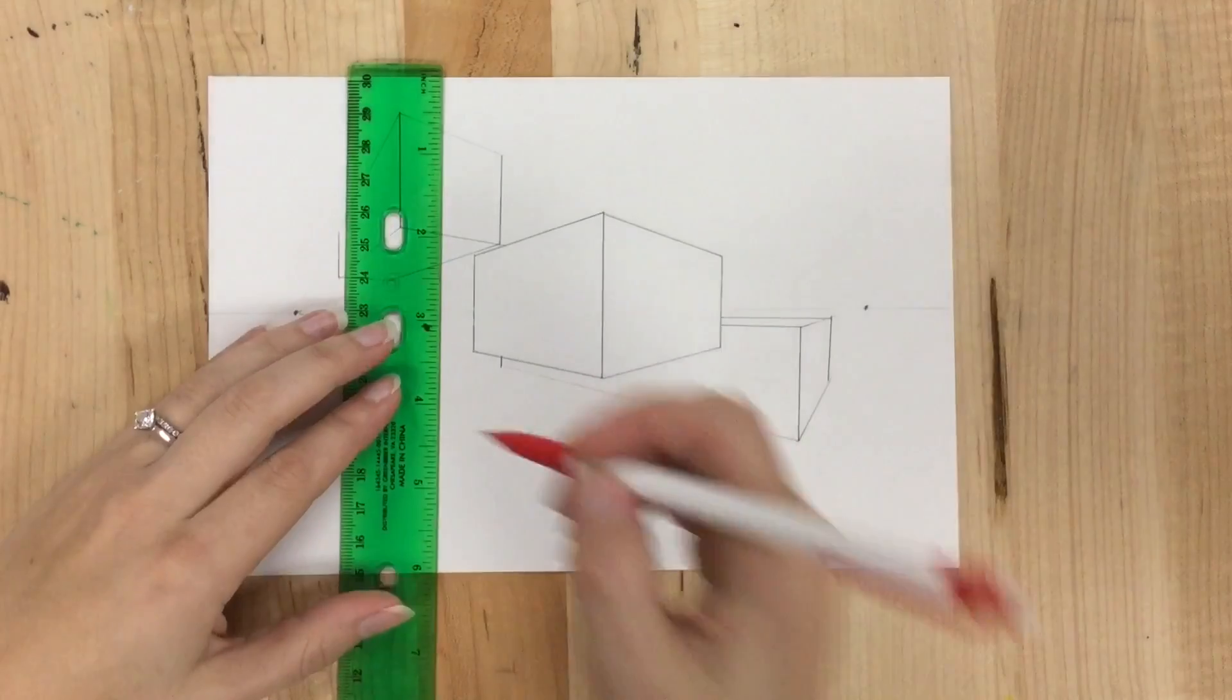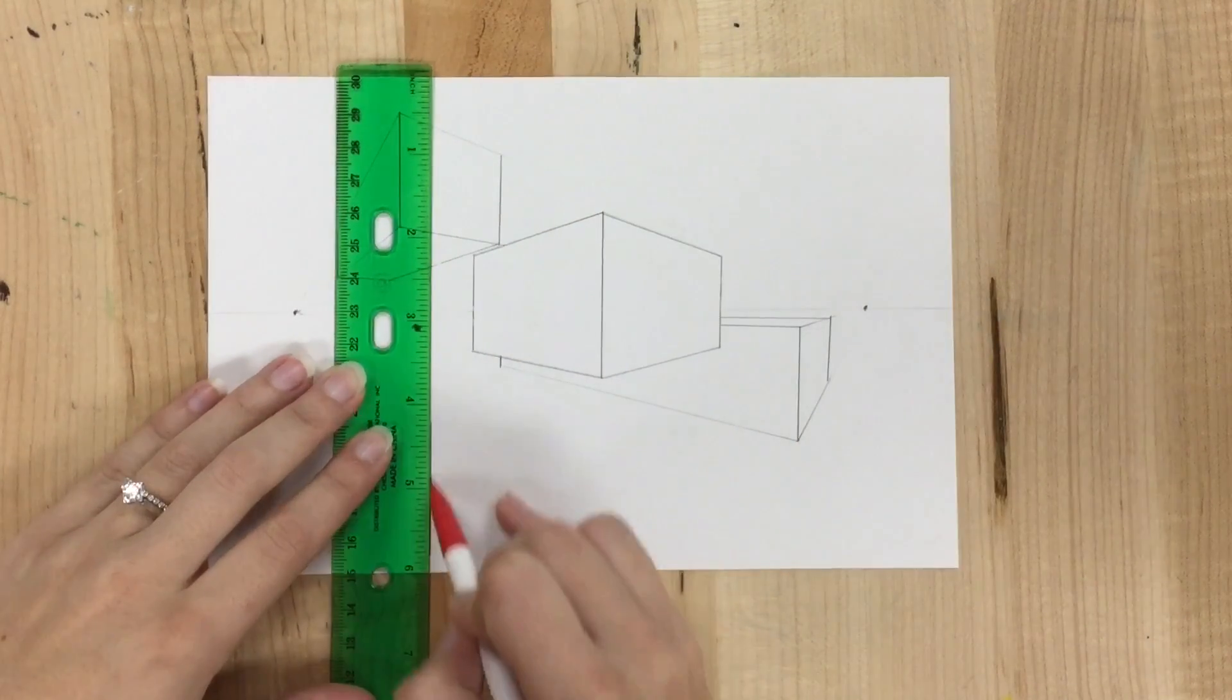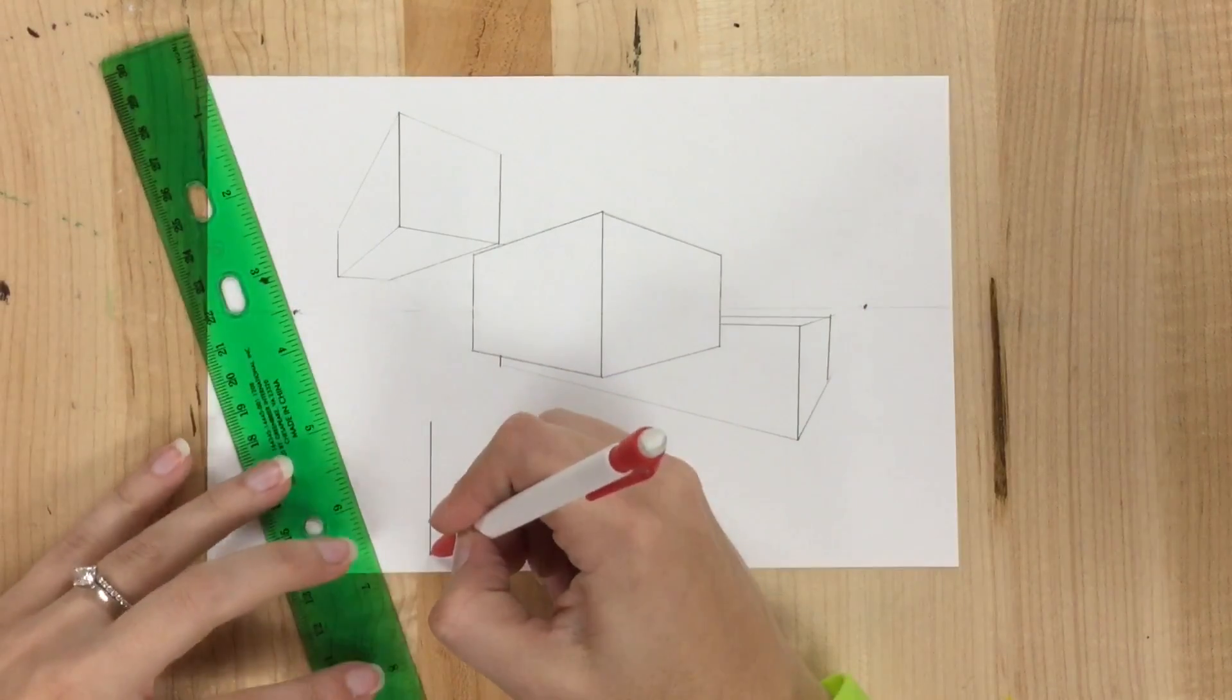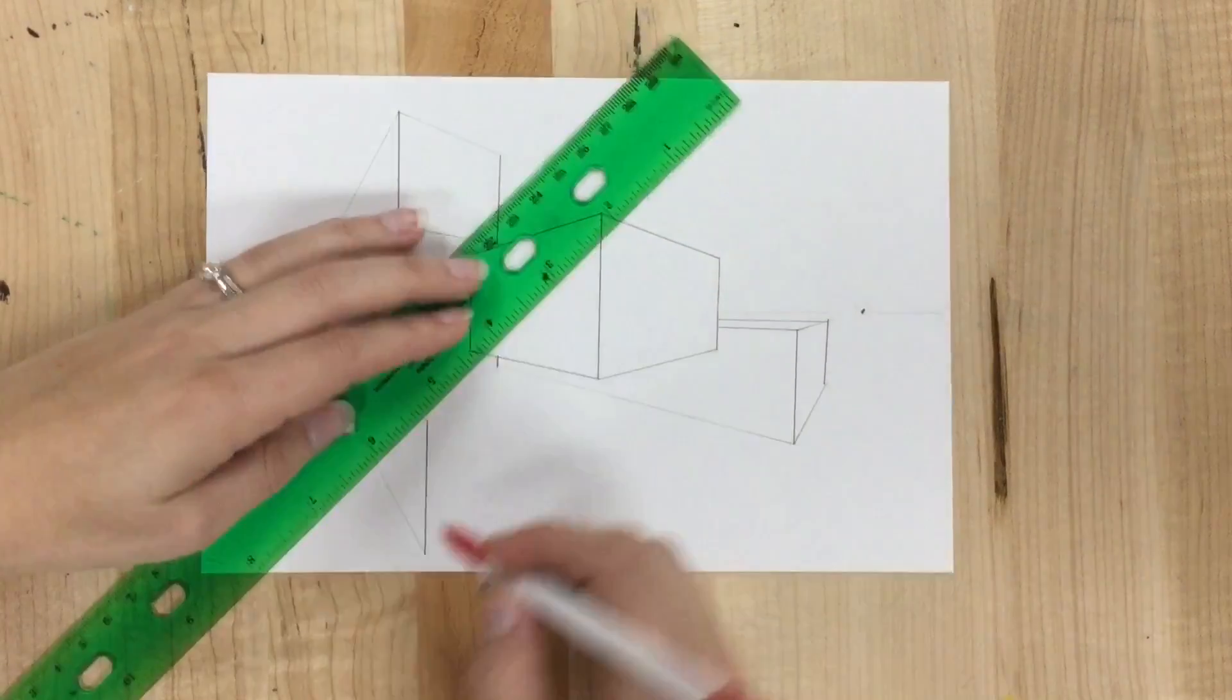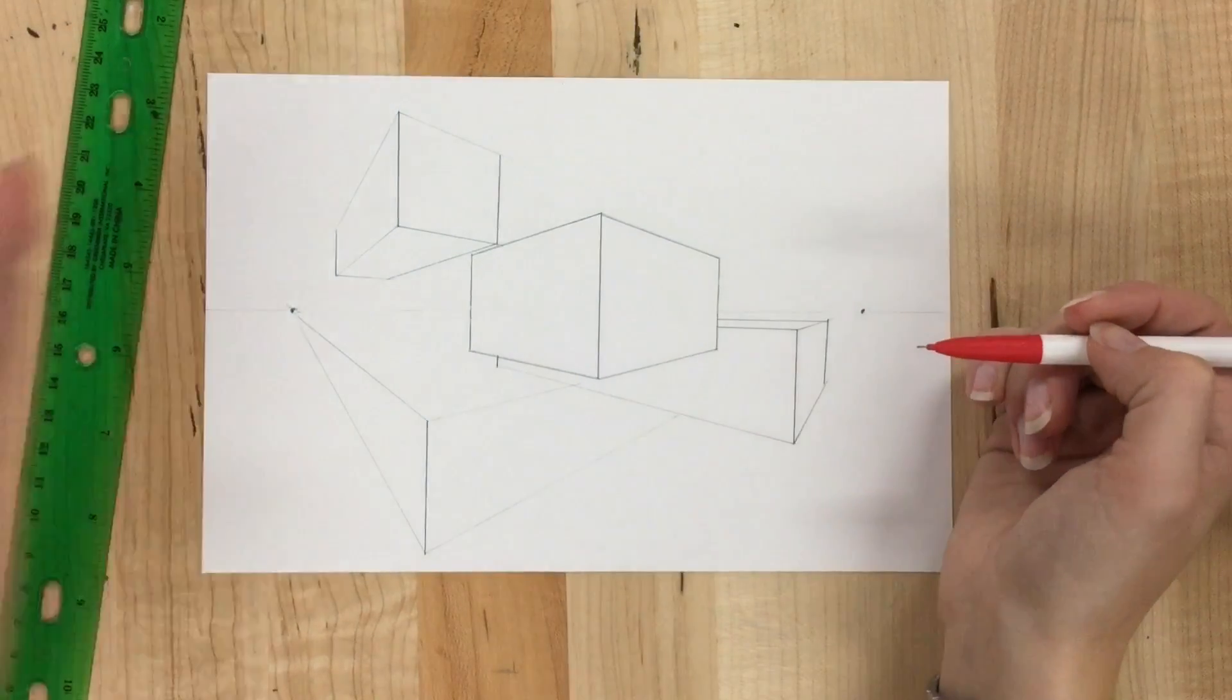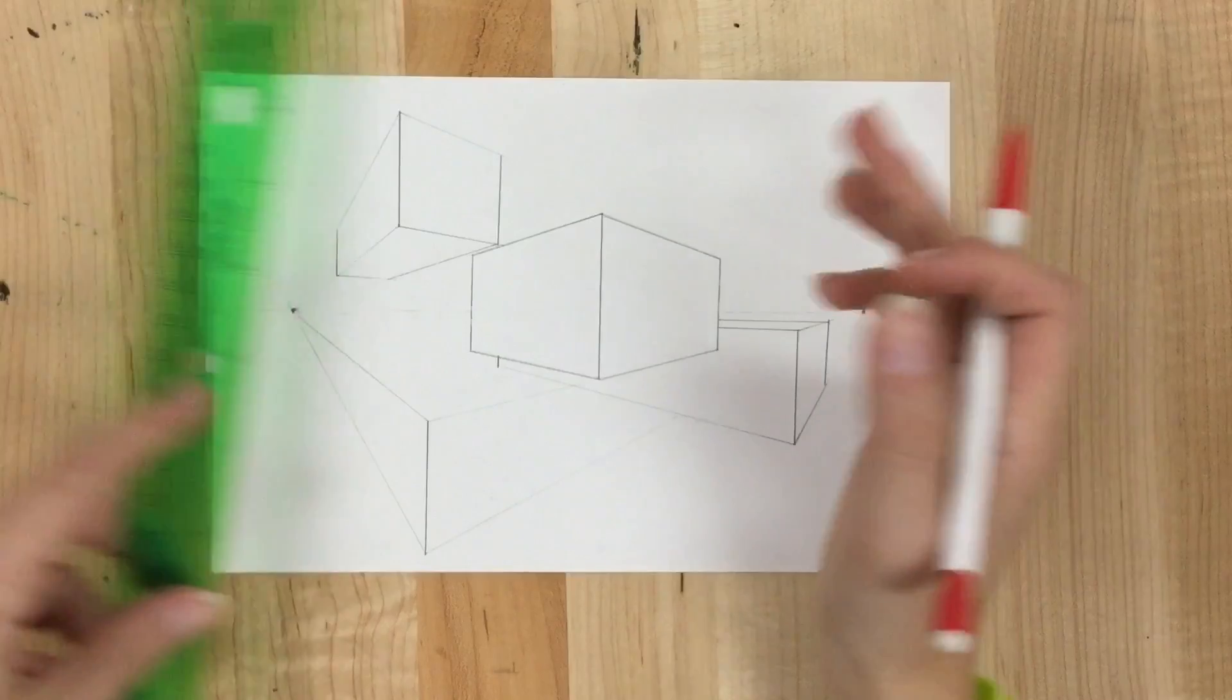I'll do another shape over here, one with a bigger top. So here's my corner. Connect the top and the bottom of my line to each vanishing point. Two parallel lines, one on the left, one on the right, to decide how far back my shape is going to go.